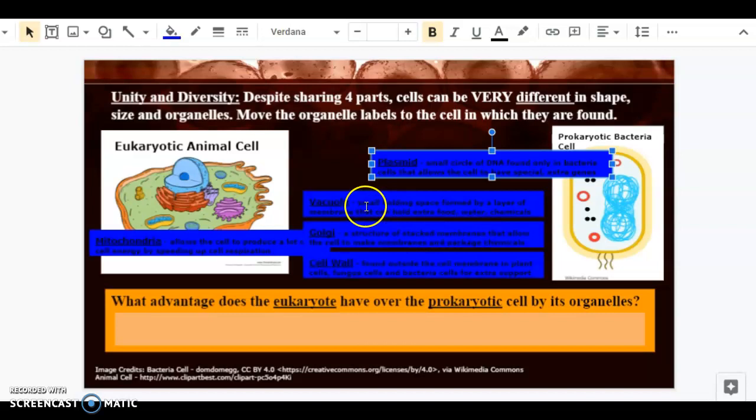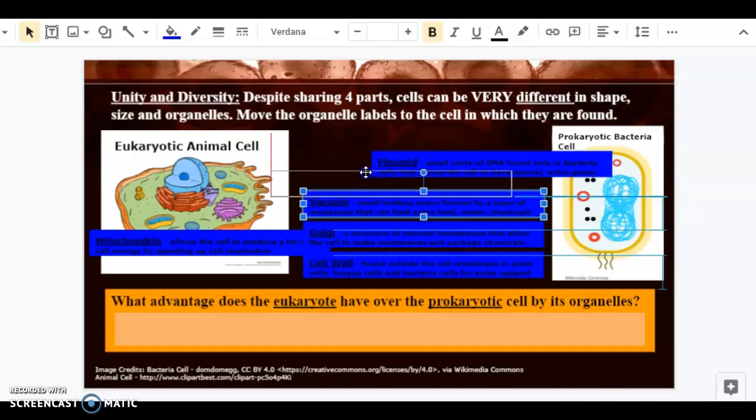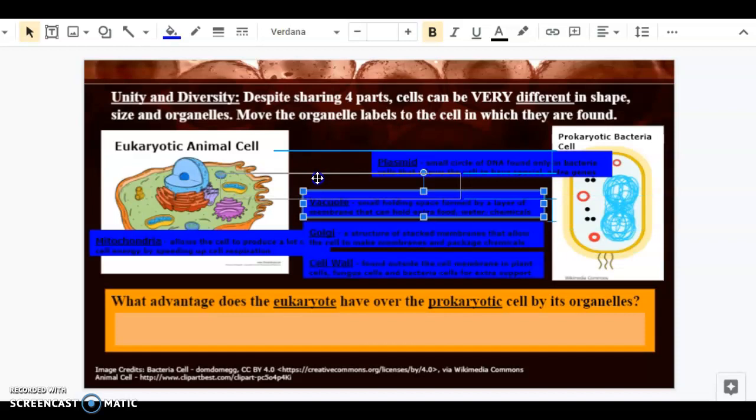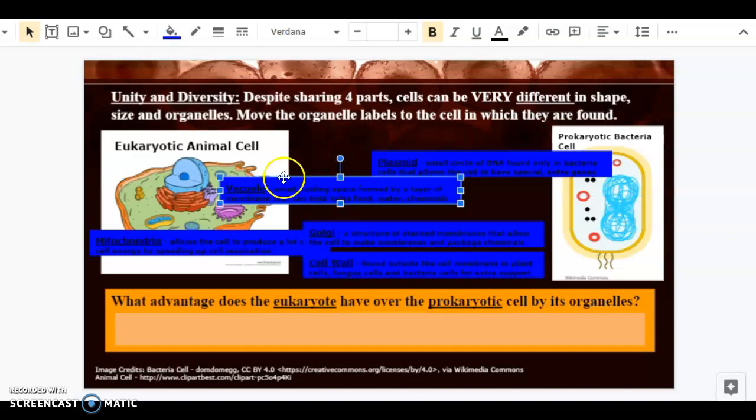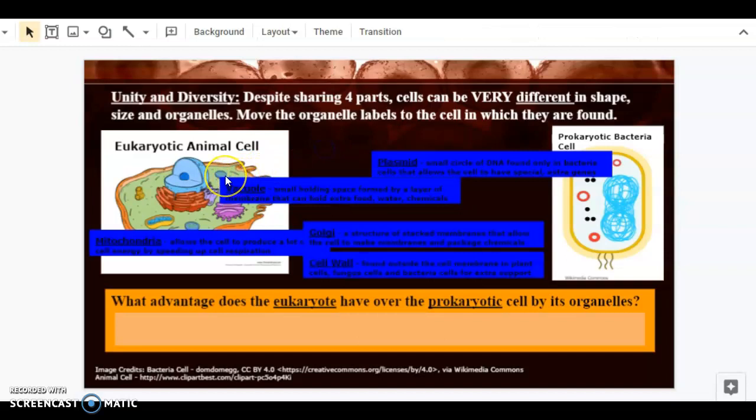Next, we have a vacuole, which is a small holding space formed by a layer of membrane to hold extra food, water, and chemicals. Because bacteria cells are so small themselves, they don't have vacuoles. Those are only found in eukaryotic cells. In fact, we see two over here. This small blue circle is the vacuole.